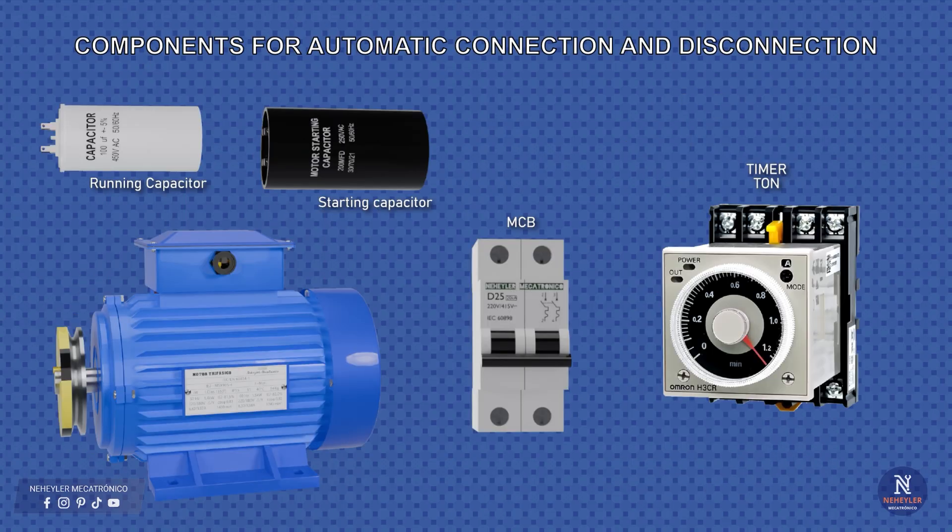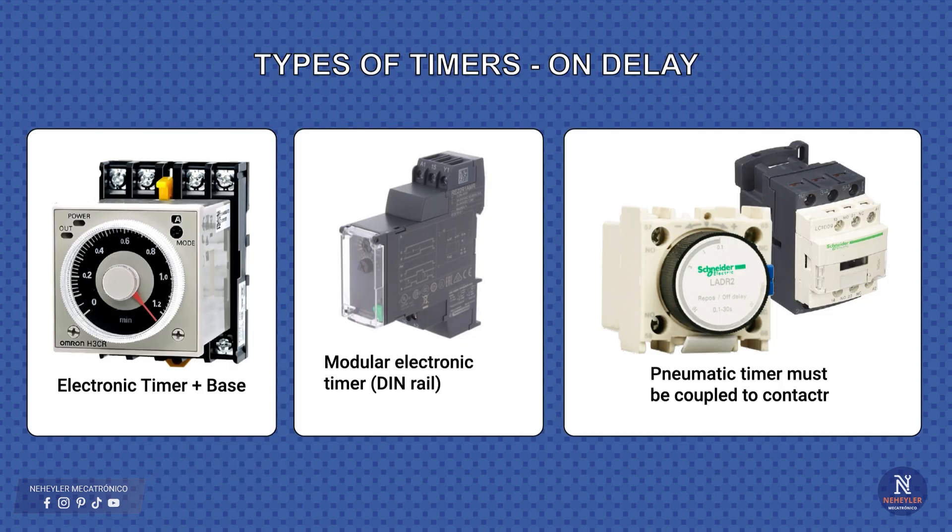Let's now move on to the automatic disconnection with a timer. Unlike the manual method we just saw, here we no longer depend on a push button, but we use a timer that automatically disconnects the start capacitor after a few seconds. In the market there are different types of timers, but for our case we are going to focus on on delay timers. On the left we see an electronic timer with a base, widely used in industry, precise and easy to install with an 8-pin socket. This is the one we are going to use in this video to disconnect the start capacitor.